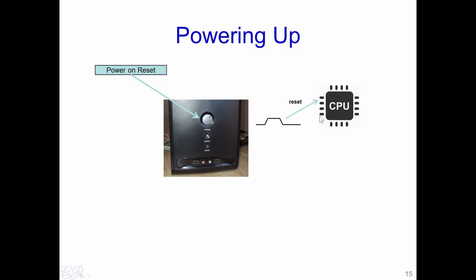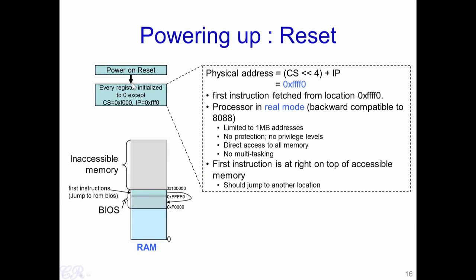Let us see the various steps involved when the CPU starts to boot. During power-on reset, every CPU register inside the CPU is initialized to 0 except for two registers: the code segment and the instruction pointer (IP). When the reset occurs, the code segment is set to 0xF000 and the instruction pointer is set to 0xFFF0.